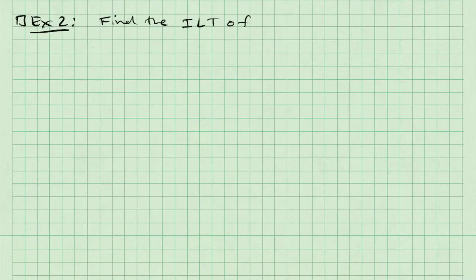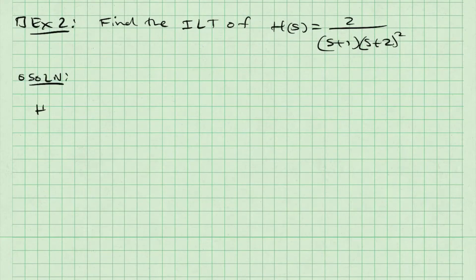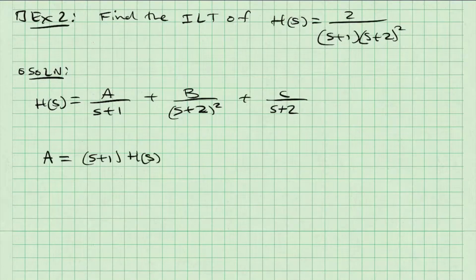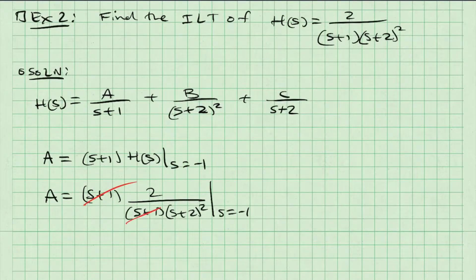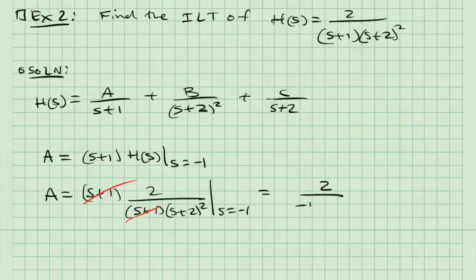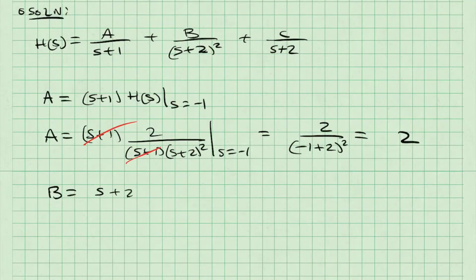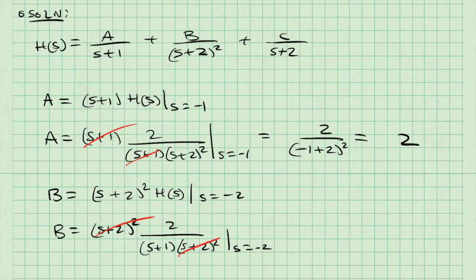To understand repeated roots, let's do another example. Find the inverse Laplace transform of H of S, where H of S equals 2 over (S plus 1)(S plus 2) squared. H of S can be decomposed into A over S plus 1, plus B over (S plus 2) squared, plus C over S plus 2. Finding A: take S plus 1 times H of S and evaluate at S equals negative 1. S plus 1 cancels, giving A equals 2 divided by (negative 1 plus 2) squared, which equals 2. B equals (S plus 2) squared times H of S evaluated at S equals negative 2. S plus 2 squared cancels, leaving B equal to 2 over (negative 2 plus 1), which equals negative 2.